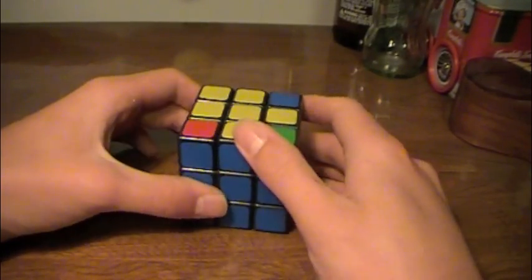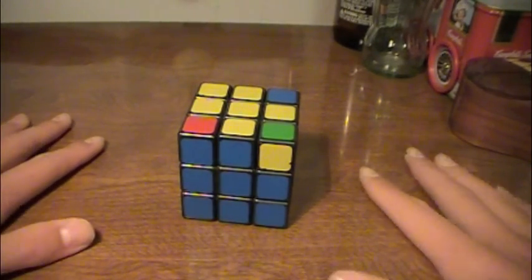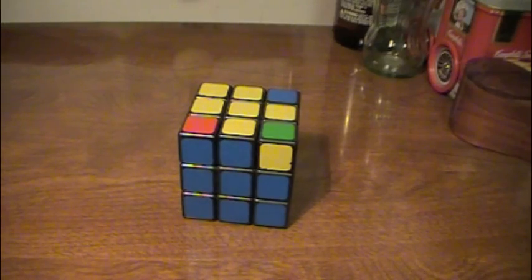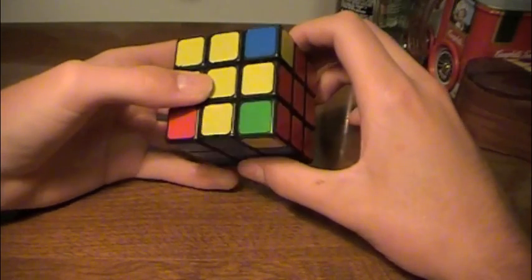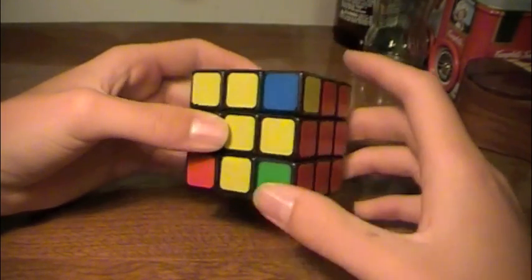Commutators are a situation in which you have three pieces, usually corners, that you need to swap, and you can do that with something that is an x, y, inverse of x, inverse of y.